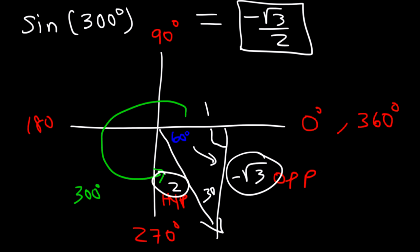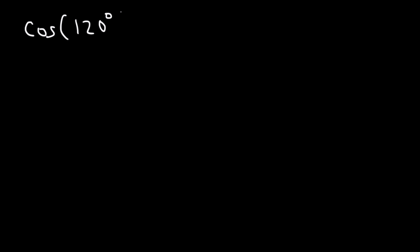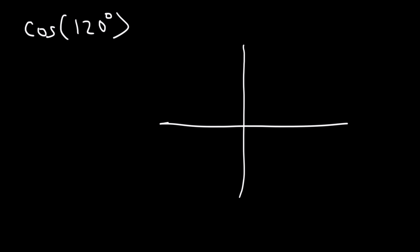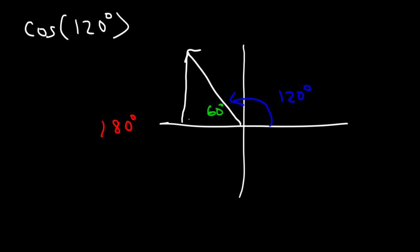That's how you can evaluate any function at any angle using special right triangles and reference angles. Now let's evaluate cosine of 120 degrees. 120 is located in quadrant 2, and since the negative x-axis is 180, the difference gives us a reference angle of 60. So once again we have the 30-60-90 triangle.